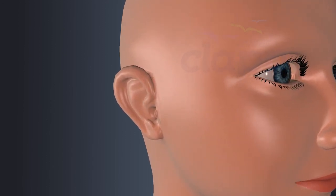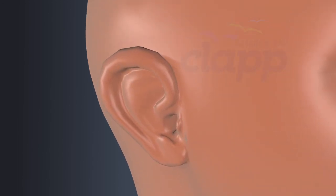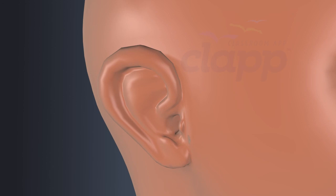Pinna has various folds, ridges and curves which aid in sound localization, helping us to identify the direction of the sound source.